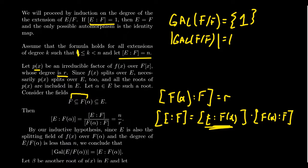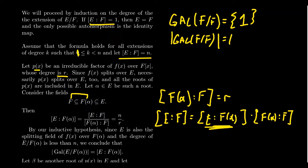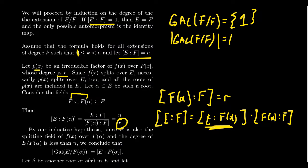By assumption, E over F is degree N, and F(α) over F is degree R, so E over F(α) has degree N/R, which is strictly less than N since P(x) is not linear. We can assume without loss of generality that none of the roots of F(x) belong to F, so R is at least 2. Our inductive hypothesis therefore applies to the extension E over F(α).